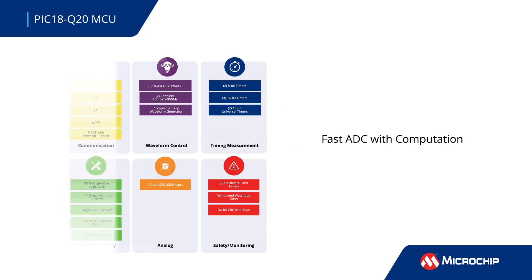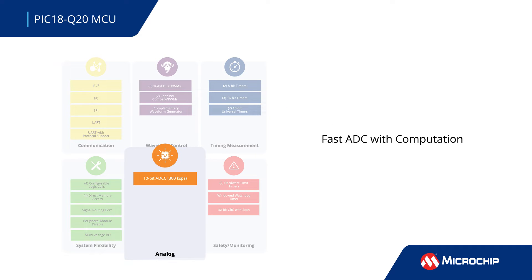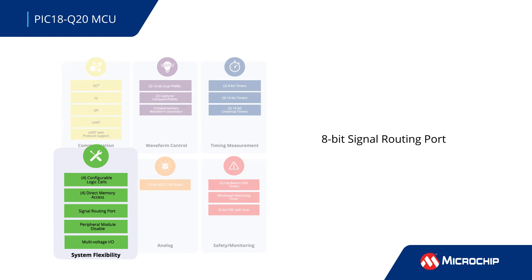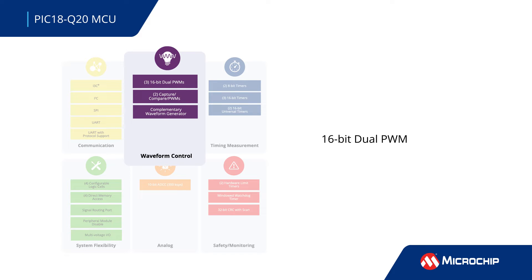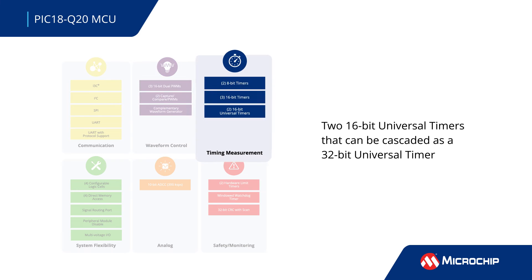The PIC18 Q20 MCUs also include a fast 10-bit analog-to-digital converter with computation that supports capacitive touch sensing. It also provides an 8-bit signal routing port to interconnect digital peripherals, 16-bit dual pulse width modulations, and 32-bit universal timers.